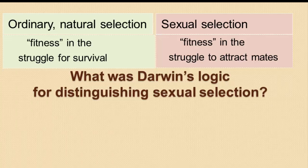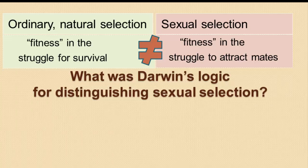This is a somewhat problematic distinction, because ultimately all that matters is reproductive success — if you survive and don't reproduce, your genes won't be represented in the next generation. Nonetheless, Darwin's distinction led to a focus on what we call sexual selection today. This distinction between natural selection and sexual selection is not made as strongly by contemporary evolutionary thinkers as it was by Darwin.